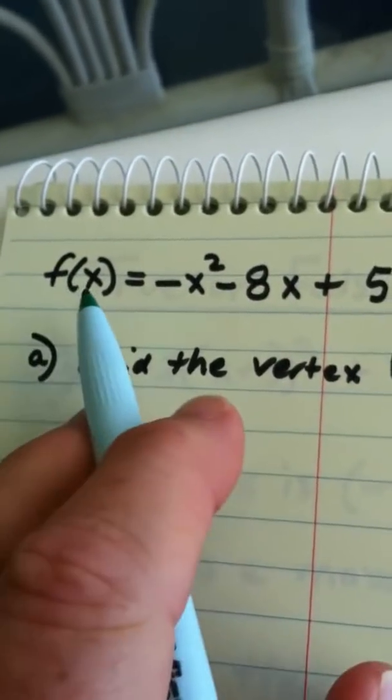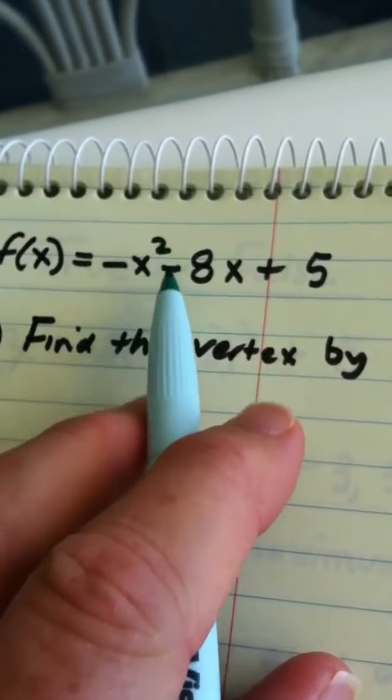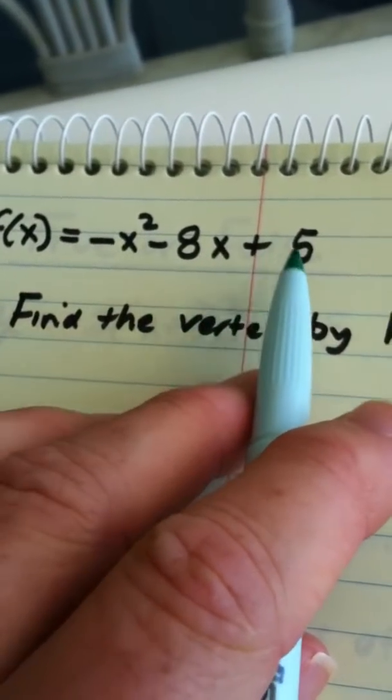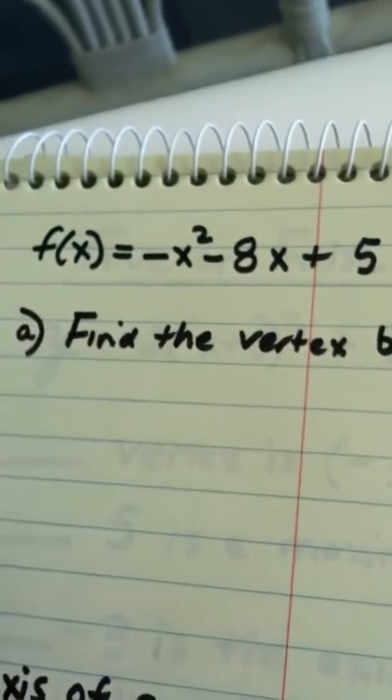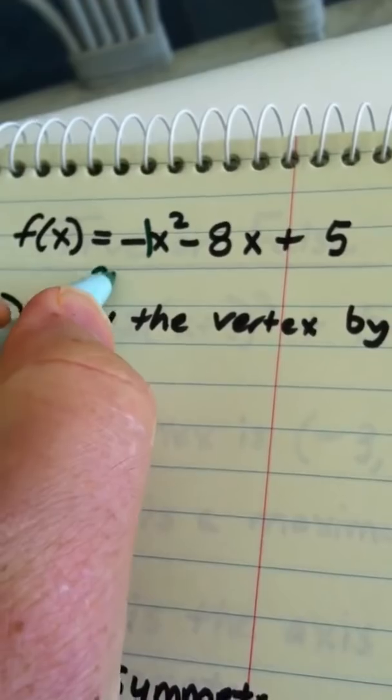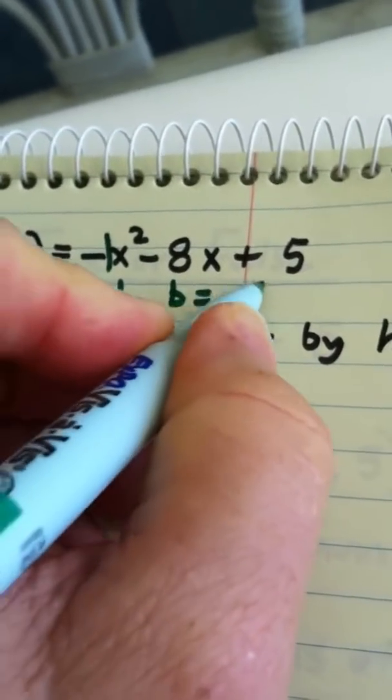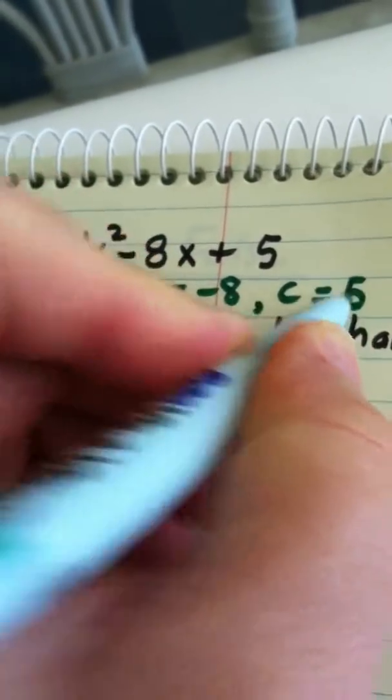Alright, the next example we have the quadratic function f of x equals opposite of x squared minus 8x plus 5. So basically what we can see a is negative 1, b is negative 8 and c is 5.